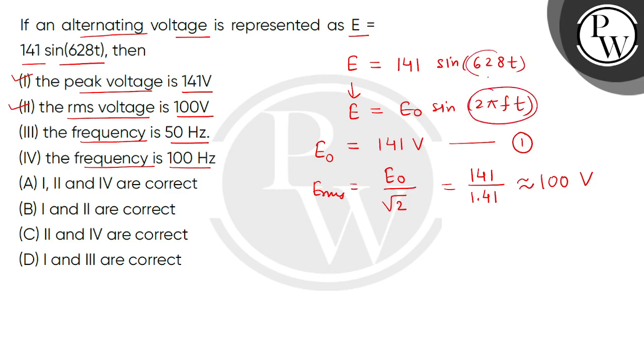Now we will compare it, meaning 2 pi f t equals 628 t. So t cancels on both sides. Now we can write pi as 3.14 multiplied by f equals 628. This product will be 6.28, which cancels from the right side, and we will get 100. It means frequency is 100 hertz.